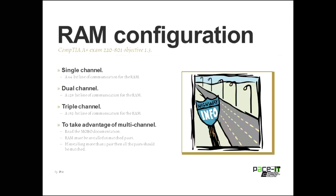You need to read the motherboard documentation for dual-channel. Then there's triple-channel, which adds another 64 bits for a grand total of 192-bit lanes between the RAM and the CPU. Slot placement is particular — some require sequential slots, some every other. If you're using dual or triple-channel and don't fill the proper number of slots, your RAM still works but chokes back down to a 64-bit line of communication.